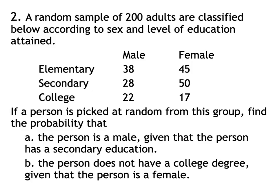For the second example, a random sample of 200 adults is classified according to sex and level of education attained: elementary, secondary, and college, for both male and female adults. The level of education represents the highest level attained by each individual. If a person is picked at random, we find: (A) the probability that the person is male given secondary education, and (B) the probability that the person does not have a college degree given that the person is female.